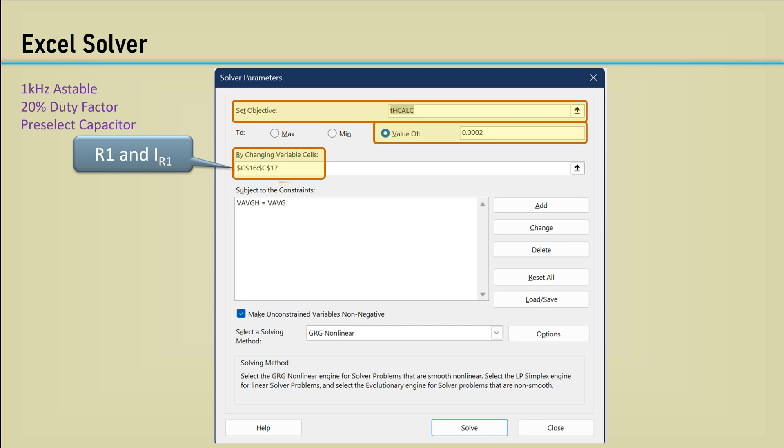We will arrive at that answer by varying the cells for R1 and IR1, the current through R1. To get the correct current, we will constrain the formula for V average in the high or low state to be equal to the 2.468 volts we came up with for the average. This will set the cell for current I to be whatever it takes to satisfy that equation. The current is of course dependent on the resistor value, but the resistor value will get adjusted simultaneously. The GRG nonlinear method needs to be selected for this since it's nonlinear.